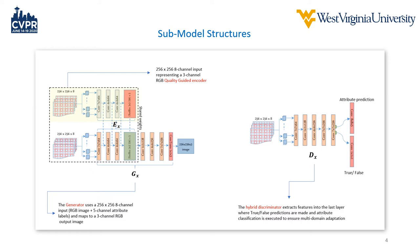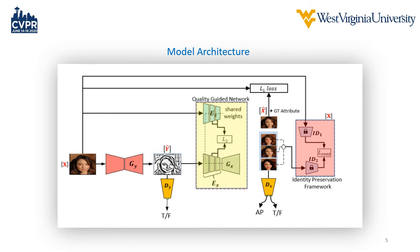We also have a discriminator on the right which is a hybrid discriminator where we handle attribute prediction and of course predicting true or false for each respective image. Our images are fed into the network with an eight-channel input — five channels for attributes and the RGB three channel.